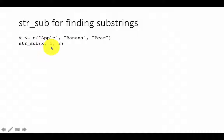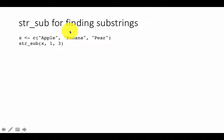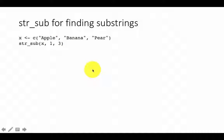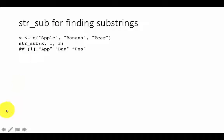It's str_sub X, 1, 3, where X is the whole vector. As we already know, it's going to take each element and operate on it separately. So it's going to give the first three characters of each — APP, BAN, and PEA. Notice that the case is maintained, so the uppercase A comes out as uppercase A, and so on.